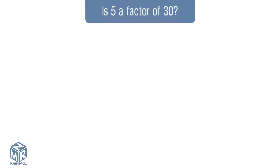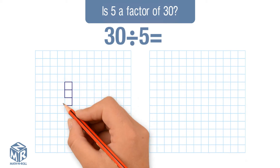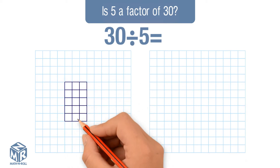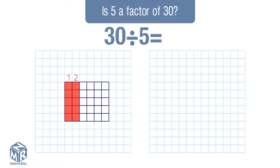Let's take a look at an example. Is 5 a factor of 30? 5 will be a factor of 30 if 5 divides 30 evenly without a remainder. We can solve using arrays and long division. Distribute the 30 tiles evenly amongst the 5 rows. We were able to distribute the 30 tiles evenly, creating 6 columns and 5 rows, without a remainder.